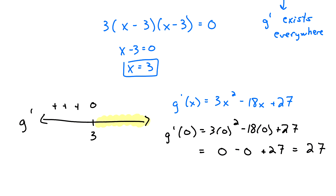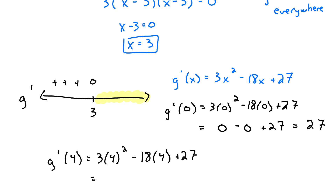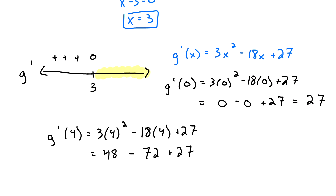Now I need a number on the right-hand side of x equals 3. I'll work with x equals 4. Plugging into g prime: 3 times 4 squared minus 18 times 4 plus 27. Using a calculator: 48 minus 72 plus 27 gives a positive 3. Again, it's the sign we're interested in — we ended up with a positive 3. So I'll put plus signs on the right-hand side to indicate that the derivative was positive there as well.